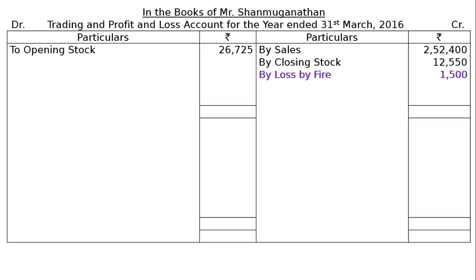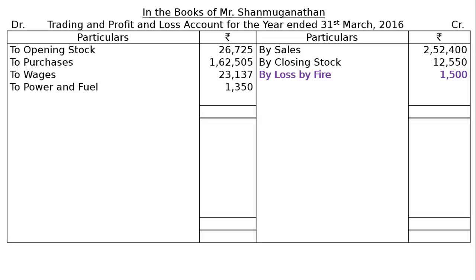On the debit side of the Trading Account: To Opening Stock Rs. 26,725; To Purchases Rs. 16,250; To Wages Rs. 23,137; To Power and Fuel Rs. 1,350. The total of the credit side is Rs. 2,66,450. The difference gives us Gross Profit carried down of Rs. 52,733.